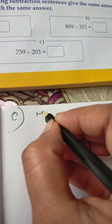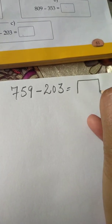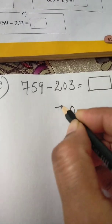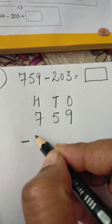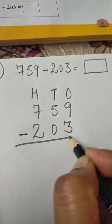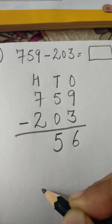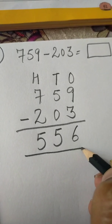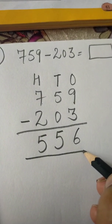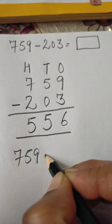Now c part: 759 minus 203. Ones, tens, hundreds: 759 minus 203. 9 minus 3 is 6, 5 minus 0 is 5, 7 minus 2 is 5 — we got 556.